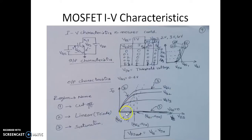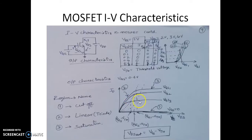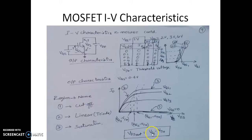For different values of VGS, the drain-to-source voltage is swept from 0 upward. The curve is first linear and then becomes saturated. There is a dotted line marking the boundary where the graph becomes flat for each curve. This boundary voltage is VDSSAT, which equals VGS minus VTH. For different values of VGS this VDSSAT point shifts accordingly.